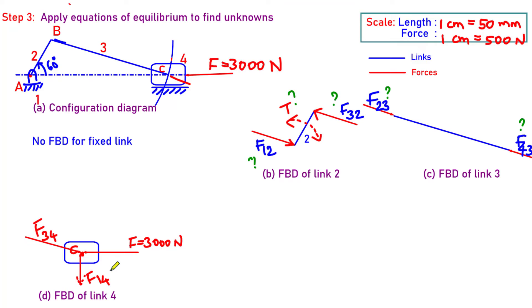Three force member can be in equilibrium only when those three forces acting on the link should form a force polygon, closed force polygon. You know that. There are two conditions of static equilibrium. Summation of F is equal to zero. Summation of M is equal to zero.